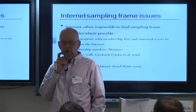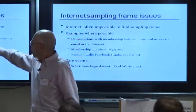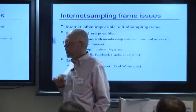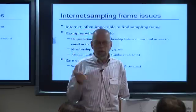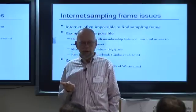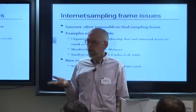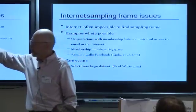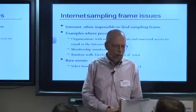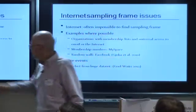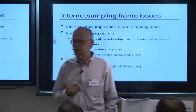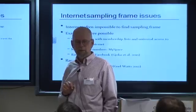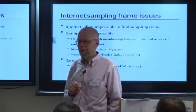There are some exceptions where you can construct a proper sampling frame. The key one is if you want to sample an organization where you have a comprehensive membership list, or where there is universal access to email or the Internet. So if you want to sample a university, a corporation, or a government department, you can probably get a good sample — but that only works because they have a complete membership list from which you can draw your sample. Interestingly, MySpace assigns its membership numbers sequentially, so if you know what the current highest membership number is, you can get a random sample of MySpace members by just starting at one and working up to whatever the current number is.